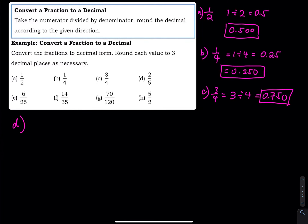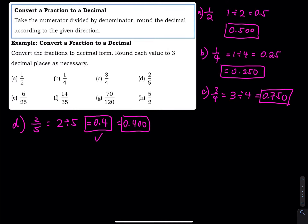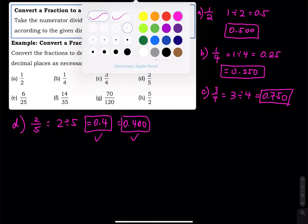Part D is 2 over 5. This is 2 divided by 5, which equals 0.4. If you write 0.4 on paper that's perfect, but sometimes for online homework they'd like to see 3 decimal places, so you add 2 extra zeros on the right-hand side of 4 to get 0.400. For example, like a GPA — you say 4.00 or 3.00, not just 4 or 3.